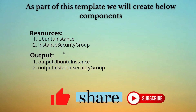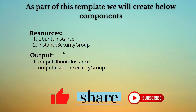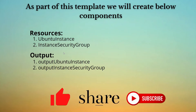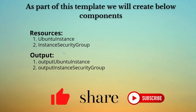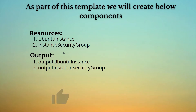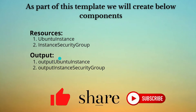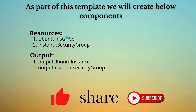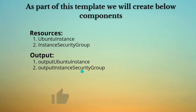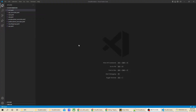The security group is going to open ports 80 and 22, that is the HTTP and SSH ports, so we can log into the EC2 instance as well as open it from the browser using port 80. As part of best practice, we are going to output the Ubuntu instance ID and the Ubuntu instance security group. Let's jump to Visual Studio Code and start building the template. I will create a template file named EC2_user_data.yaml.